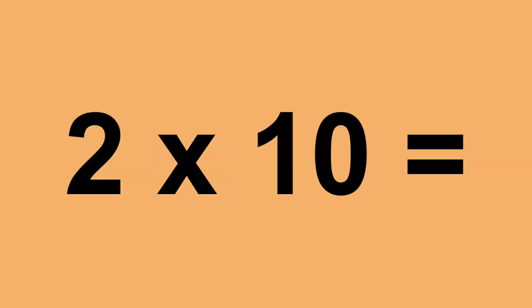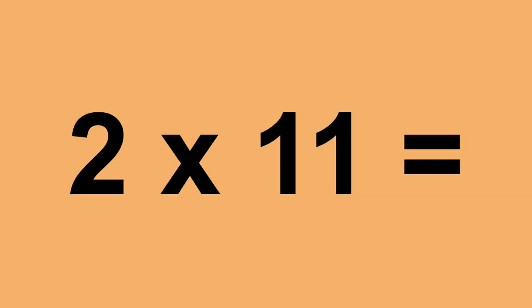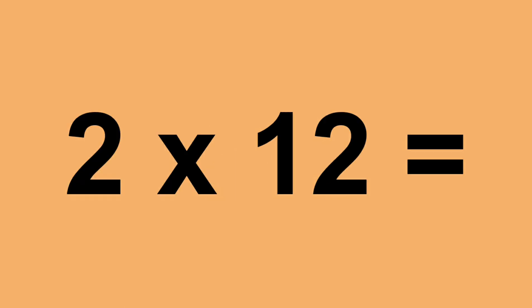Two times ten equals twenty. Two times eleven equals twenty-two. Two times twelve equals twenty-four.